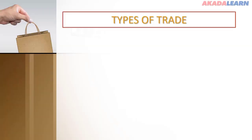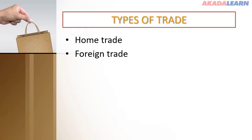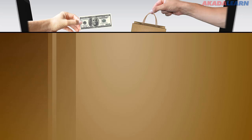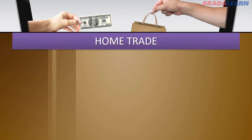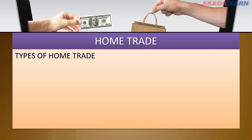Types of Trade: We have Home Trade or Domestic Trade, and Foreign or International Trade. Home Trade is also referred to as Domestic Trade. It is the act of buying and selling within a geographical location, usually a country. In Home Trade, there is the use of a common currency. In Nigeria, we make use of the Naira. We have two types of Home Trade: Retail Trade and Wholesale Trade.